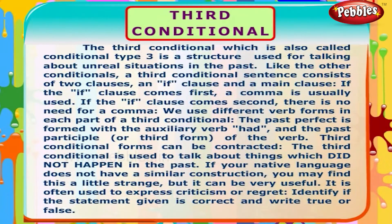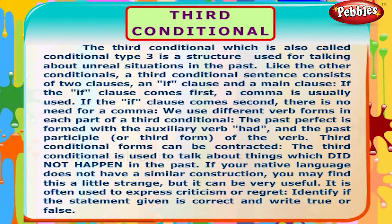The third conditional, which is also called conditional type 3, is a structure used for talking about unreal situations in the past. Like the other conditionals, a third conditional sentence consists of two clauses: an if clause and a main clause.